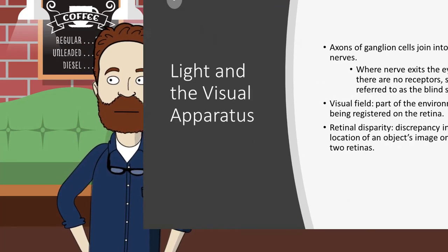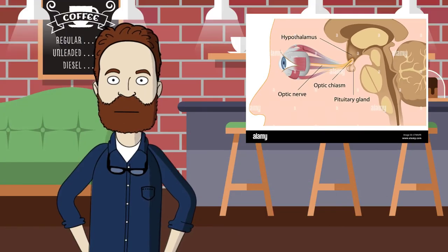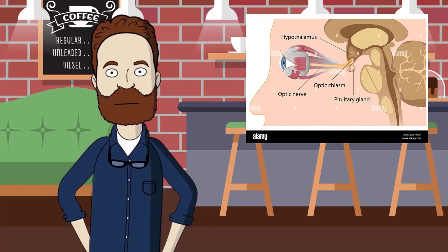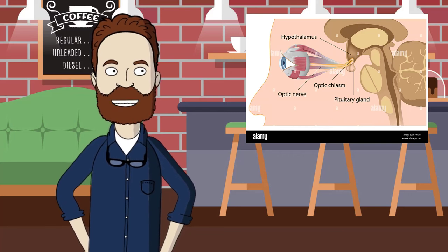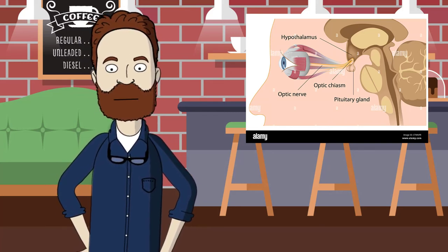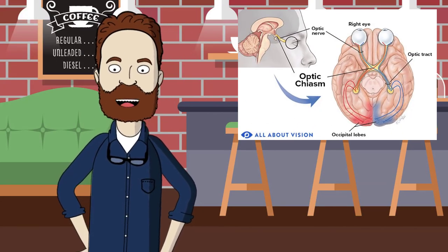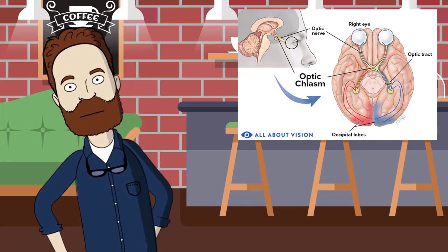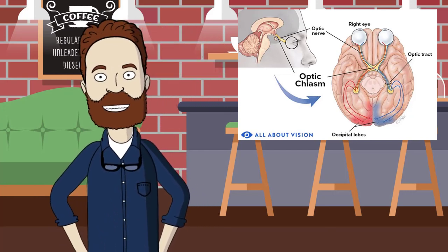The two optic nerves run to a point just in front of the pituitary gland where they join for a short distance at the optic chiasm before separating again and traveling to the thalamus. At the optic chiasm, axons from the nasal sides of the eye cross to the other side and go to the occipital lobe in the opposite hemisphere.